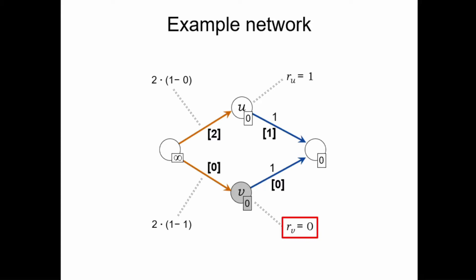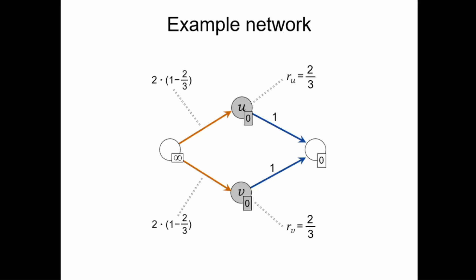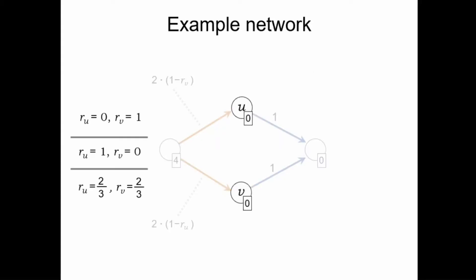These are both solutions — equilibrium points of this system. A deeper analysis shows there is also a third solution where both U and V are in default with recovery rates of two thirds. In this case, on both CDSs we have a payment obligation of two thirds, so both U and V can pay two thirds to the sink node, which is consistent with the recovery rates. This means the system has three very different equilibria, and this poses a conflict of interest between the different nodes: V would clearly prefer the first equilibrium where V is not in default, while U would prefer the second, which raises a lot of curious questions.